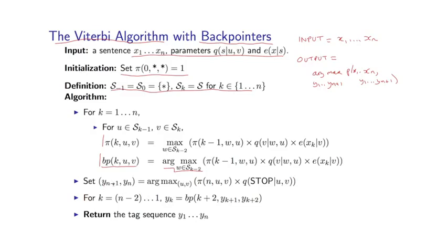After this loop is completed, I say y n minus 1, y n is the u, v pair that maximizes pi n u v times q stop given u v. So I've found the last two tags in the sequence. And then I go backwards through the sequence at each point saying that y k is the back pointer of k plus 2, y k plus 1, y k plus 2.